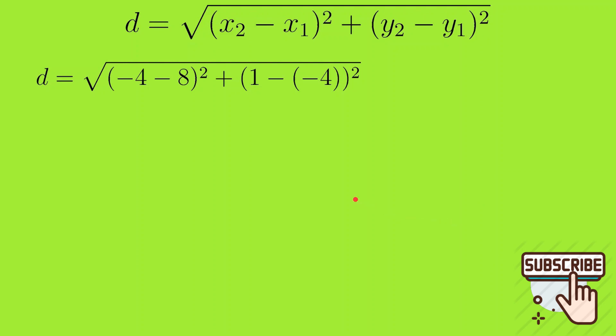d is equal to minus 4 minus 8 whole squared plus 1 minus minus 4 whole squared. That is, we have simply substituted the values of their coordinates. So minus 4 minus 8 is minus 12, 1 minus minus 4 is 1 plus 4, that is 5. So d is equal to minus 12 squared plus 5 squared.